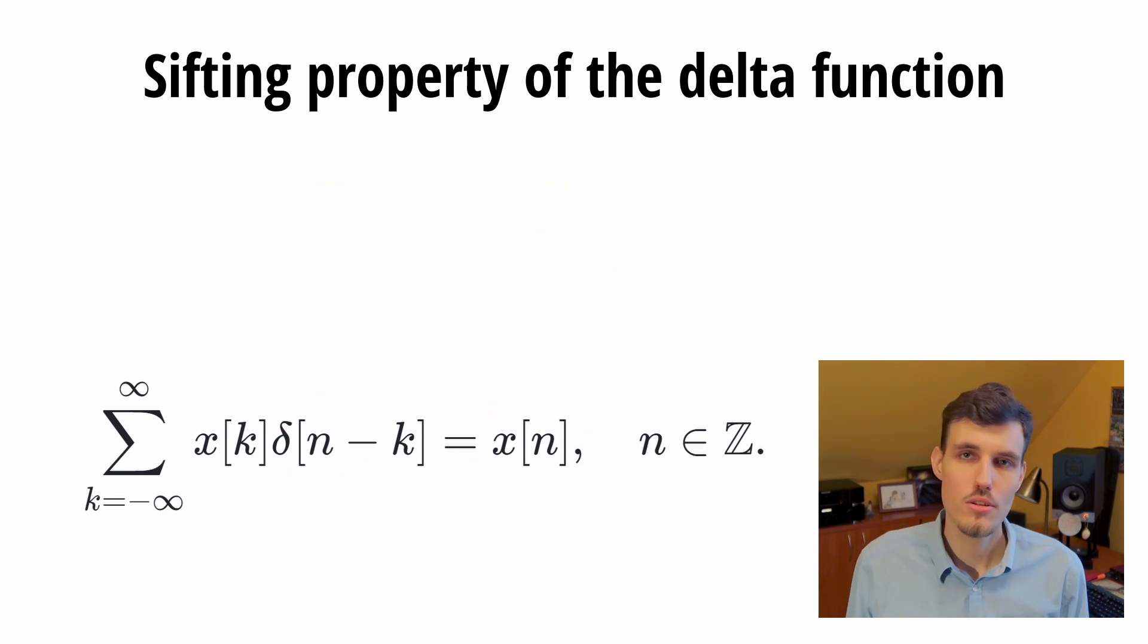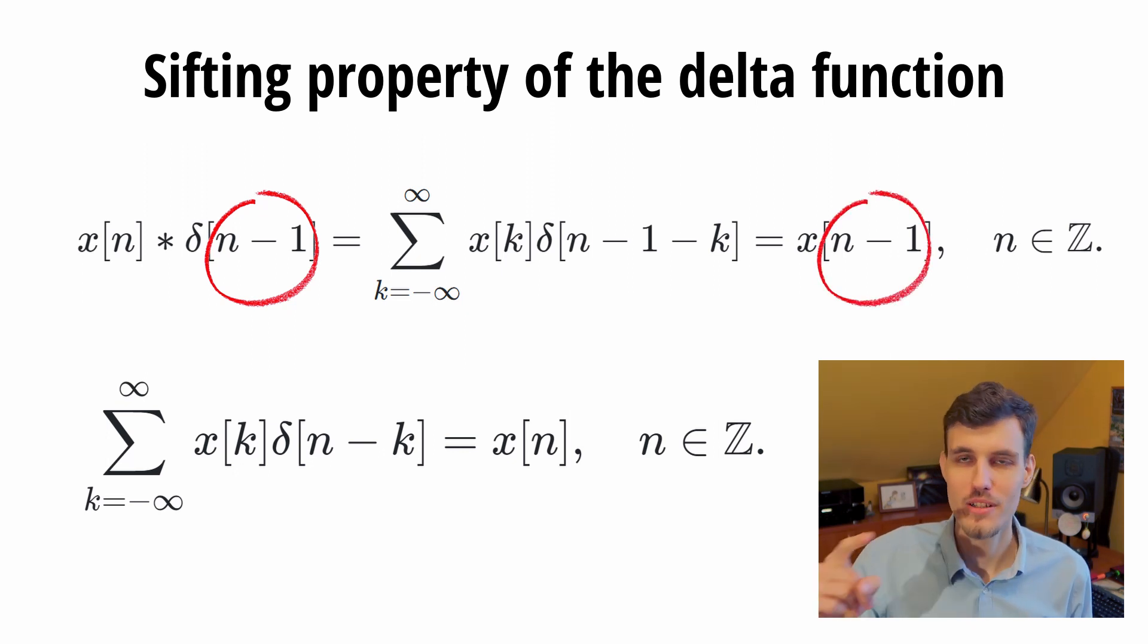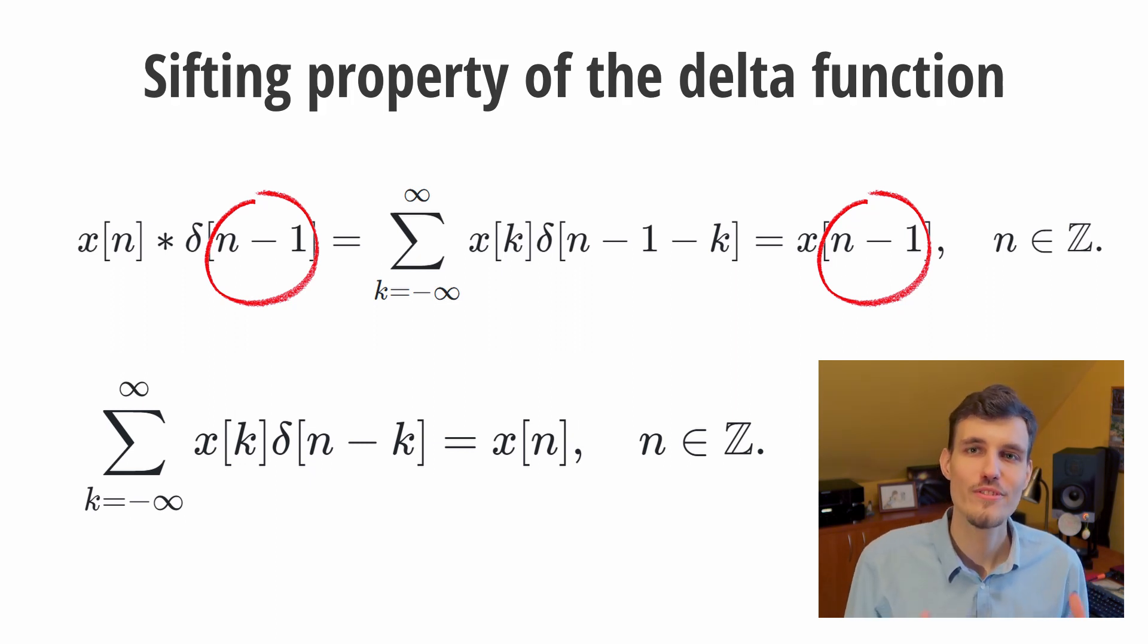Now, let's look what happens if we shift the discrete delta argument by 1. It turns out that shifting the argument of the delta impulse and then convolving it with our signal shifts the argument of our signal, effectively delaying it. So it is the concept of delay.